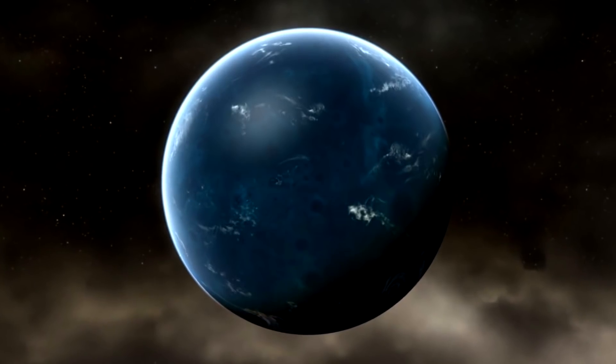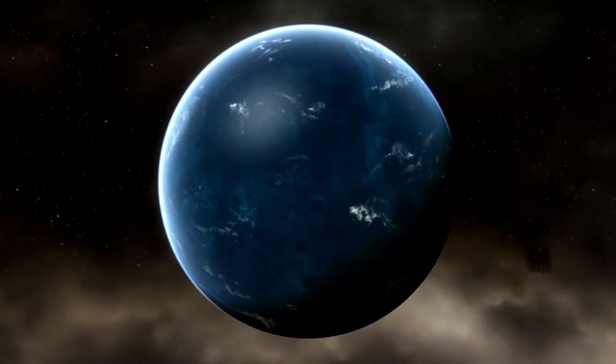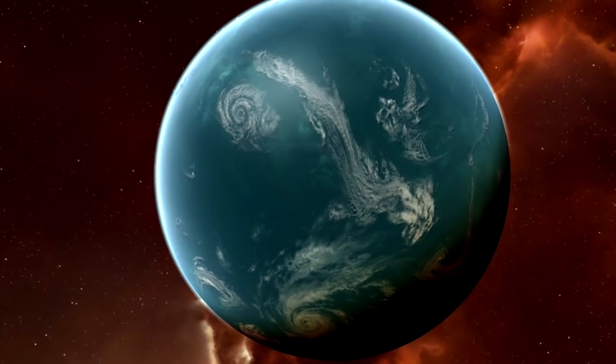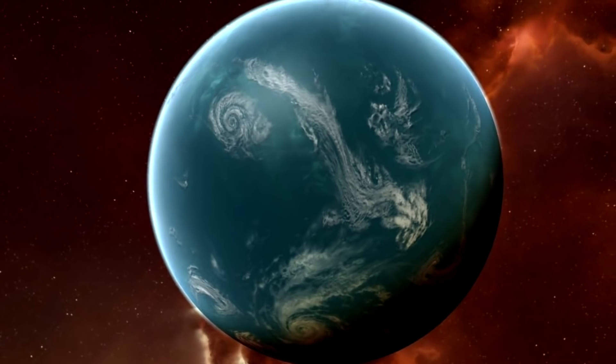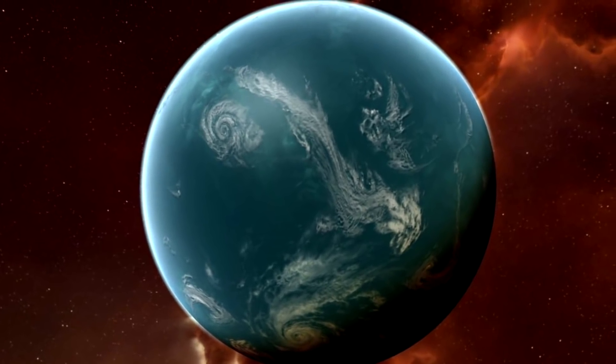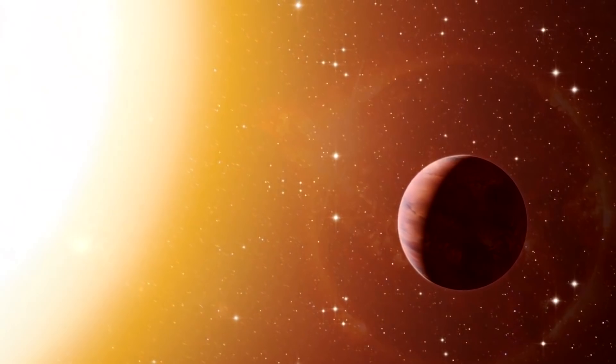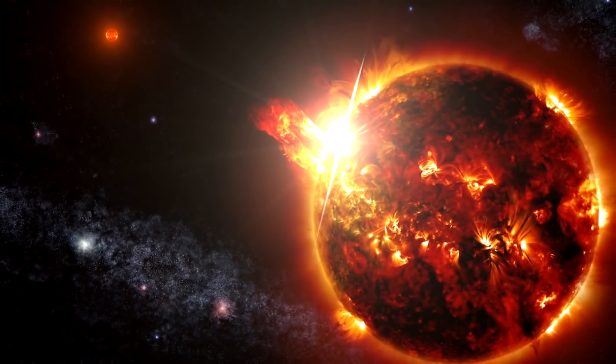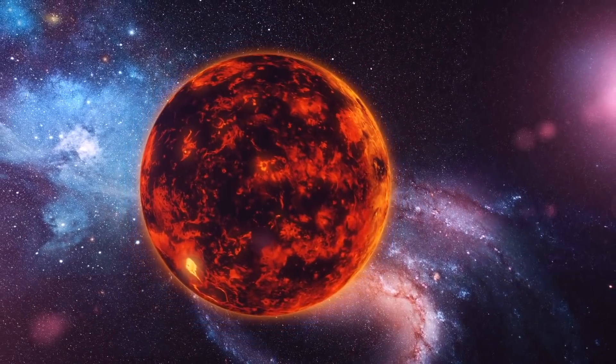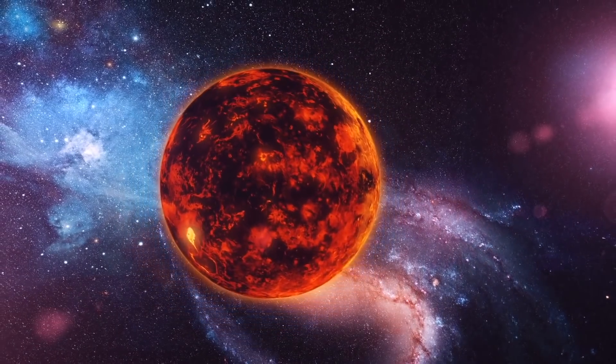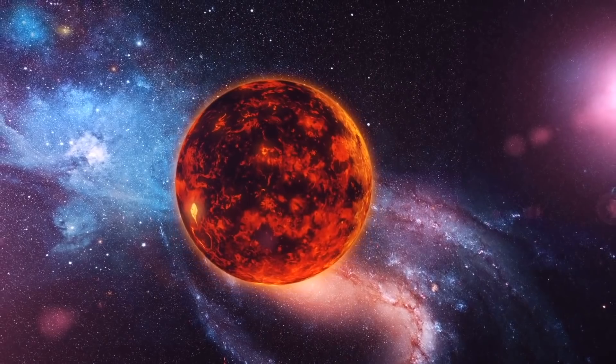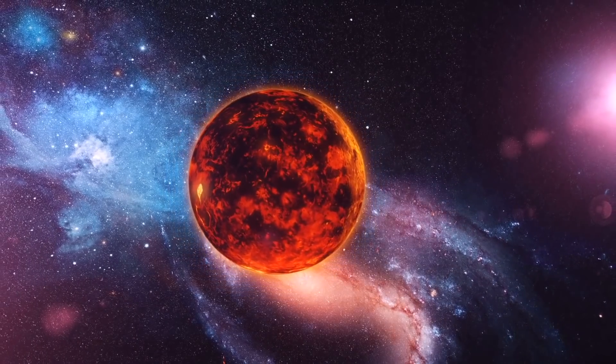To study these exoplanets, scientists have conducted many missions that resulted in a huge number of discoveries. One such discovery has been made recently, but this one is really strange. Not the kind of strange that we usually see in space, but we can say that this exoplanet is existing against the laws. With what it looks like, the planet just should not exist.